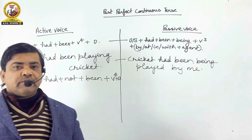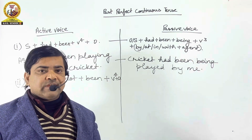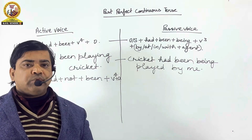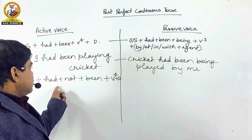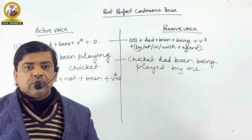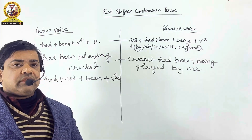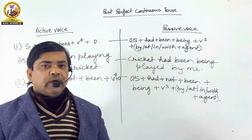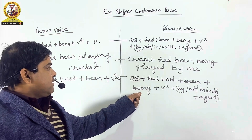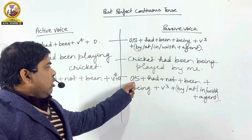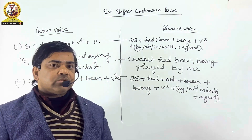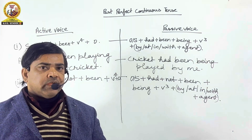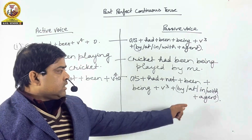The second structure formula in active voice of past perfect continuous tense is: subject + had + not + been + V4 + object. This is used to make negative sentences. The passive voice formula is: object/subject + had + not + been + being + V3 + by/at/in/with + agent.